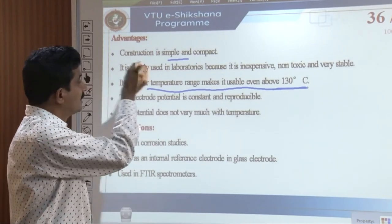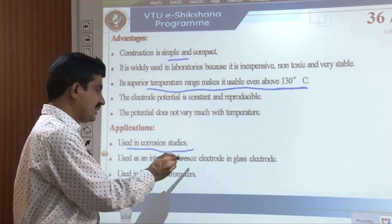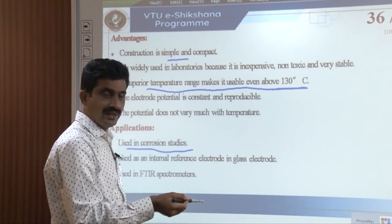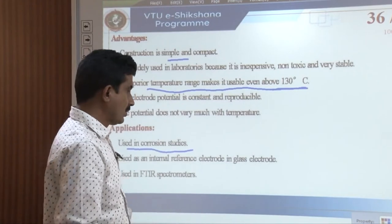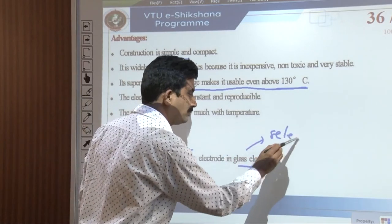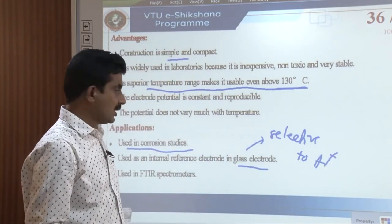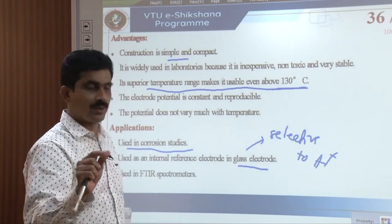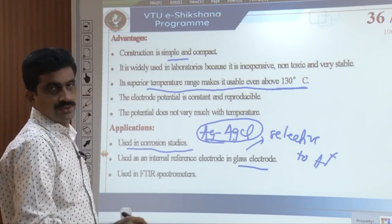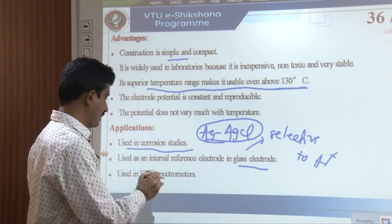Applications of the silver-silver chloride electrode: it is used in corrosion studies and as an internal reference electrode in the glass electrode. In our next class we will discuss the construction of the glass electrode and pH measurement using it. The glass electrode is an ion selective electrode — selective to H⁺ ions — and this Ag-AgCl electrode serves as the internal reference electrode within it.